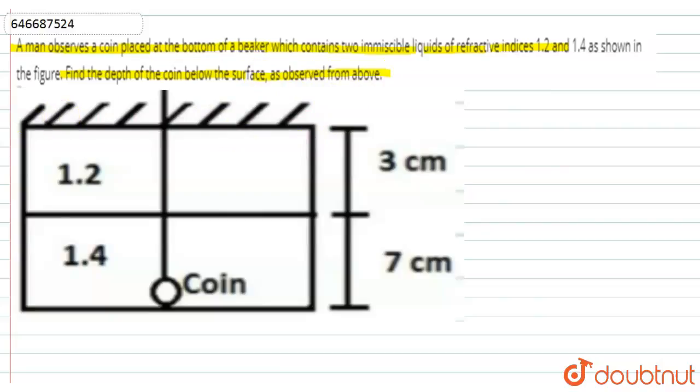We have to find the apparent depth. Let us consider h as the real depth, which equals 3 plus 7 cm. So this equals 10 cm. Now we need to find the apparent depth.